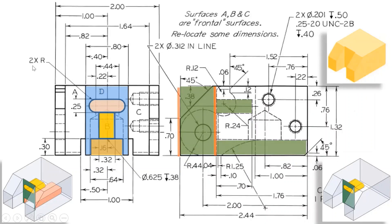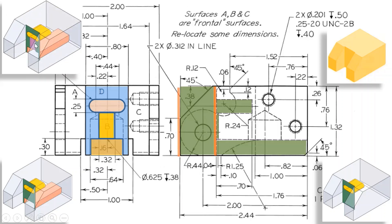We then have surface B, which is another parallel frontal face. We sketch the true shape on surface D. By projecting lines from the top and bottom of surface B, we find another hidden line at an offset distance of 0.04 from surface D. We sketch the true shape on surface D and take a cut deep inside to generate the offset surface. This is how the 3D image looks after generating surface B.